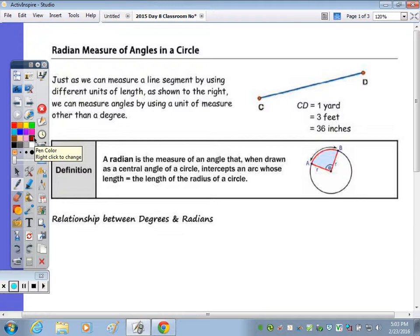The definition of a radian is within the box. It says a radian is the measure of an angle that when drawn as a central angle of a circle, so you have to have a central angle of a circle, intercepts an arc whose length equals the length of the radius. So the measure of arc AB would be equal to R, whatever the radius is.